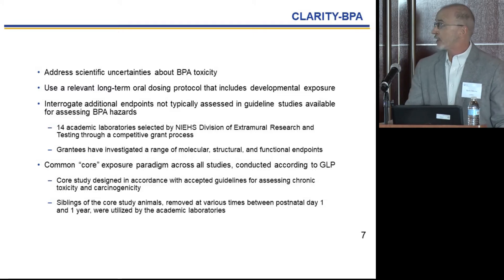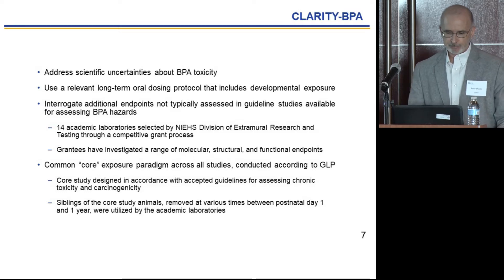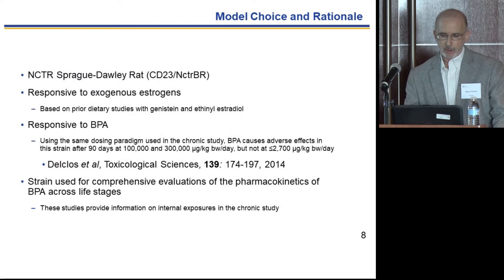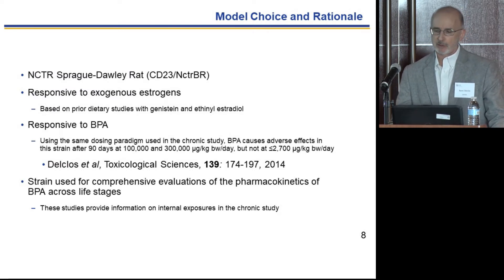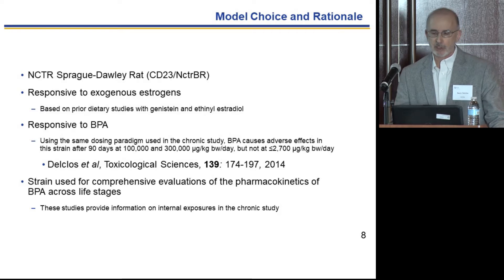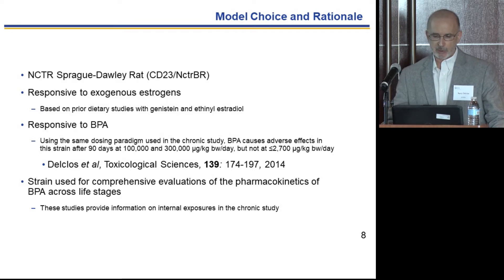The study was designed in accordance with accepted guidelines in terms of endpoints and numbers of animals. The rat model used was from our NCTR colony, which was shown to be responsive to exogenous estrogens through dietary studies conducted with genistein, the soy isoflavone, and ethinyl estradiol, and responsive to BPA in our 90-day study. In the 90-day study, at doses below 2.7 mg/kg/day we saw no significant effects; all effects were seen at the higher doses of 100 and 300,000 µg/kg/day.